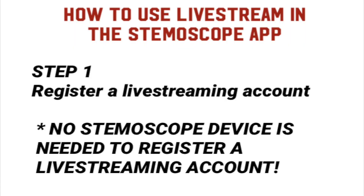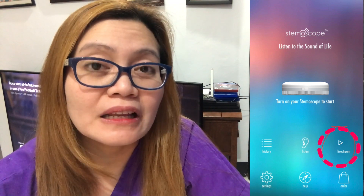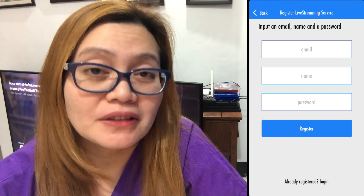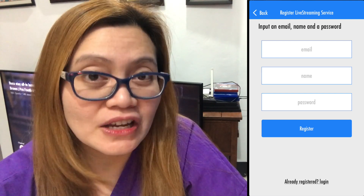Now I'm going to teach you step-by-step how to use the live stream of the StemScope application. Step 1: Register a live streaming account. Take note that no StemScope device is needed to register a live streaming account. To register, click the live streaming icon located at the lower part of the StemScope application homepage, then provide all the necessary details like your email, your name, and chosen password. Then click the register button.